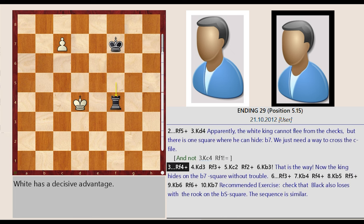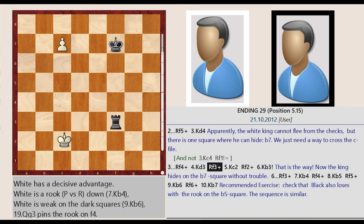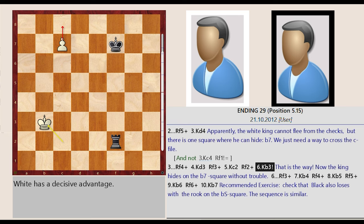Rook f5 f4. King d4 d3. Rook f4 f3. King d3 c2. Rook f3 f2. King c2 b3. That is the way. Now the king hides on the b7 square without trouble.